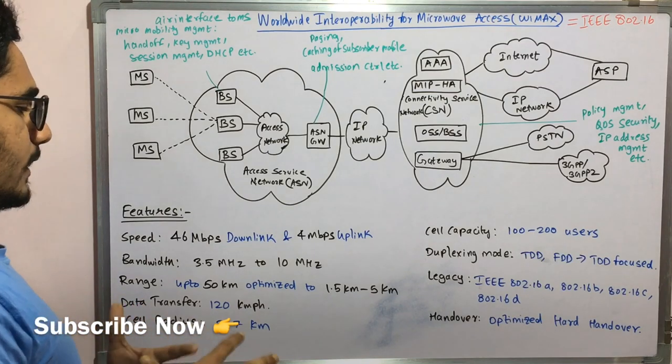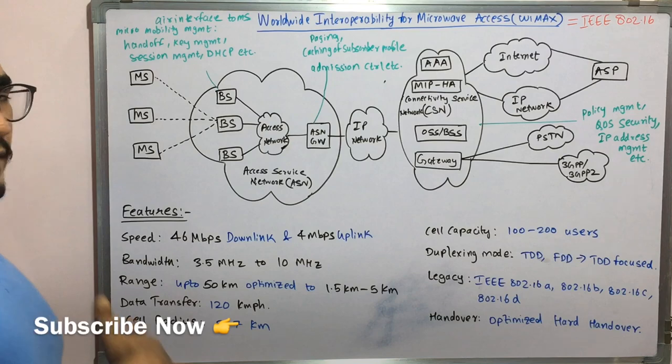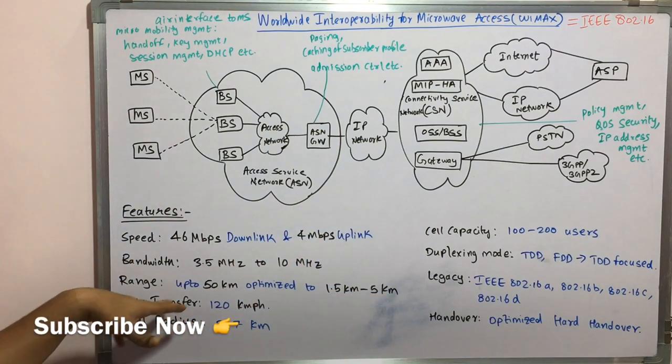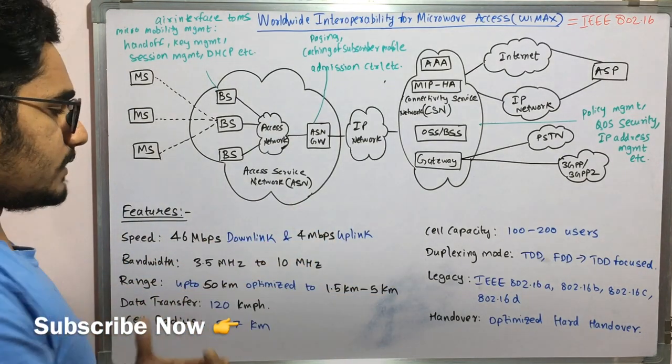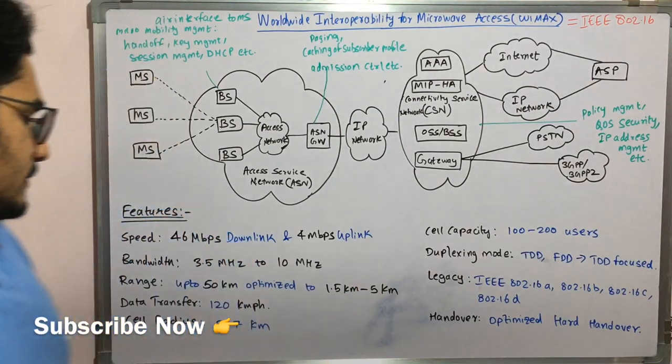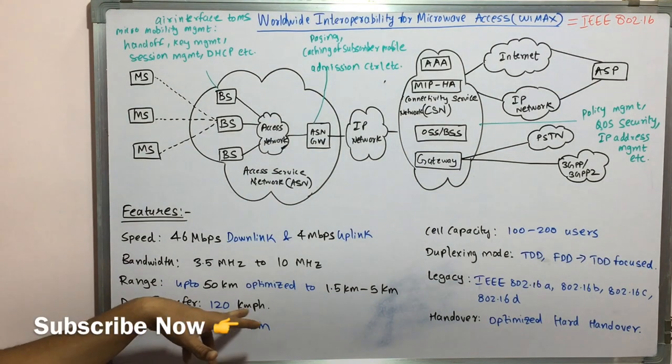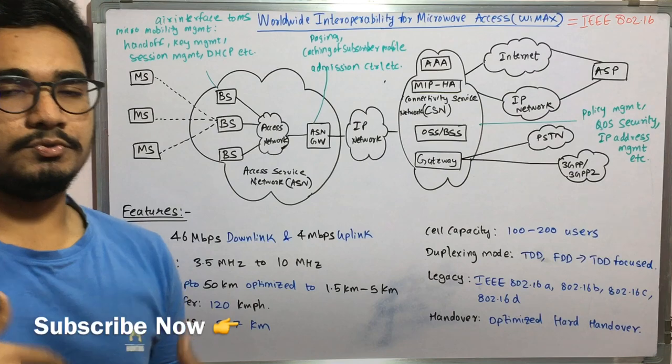That's a normal range which WiMAX provides and then you have the range of the network connectivity is up to 50 kilometer but it is optimized up to 1.5 to 5 kilometer by reducing the cell size. And you have the data transfer at 120 kmph.